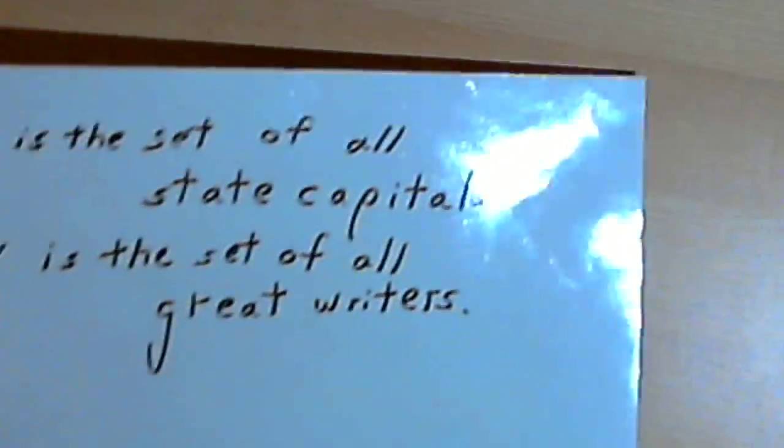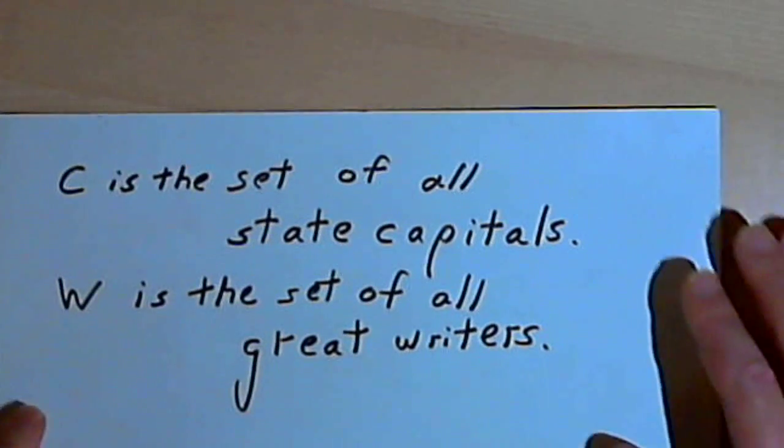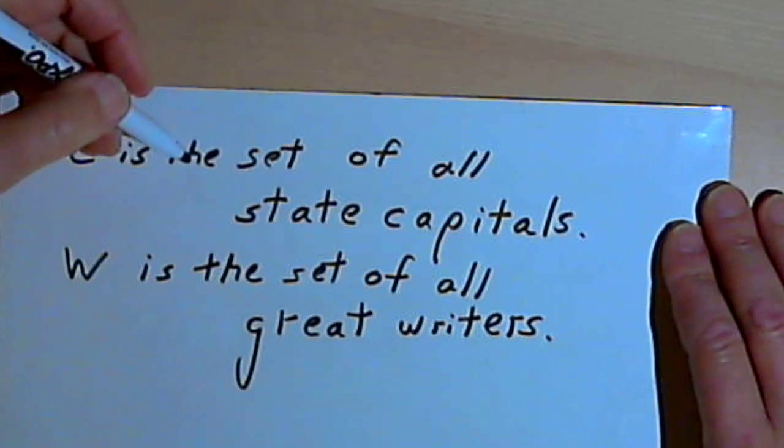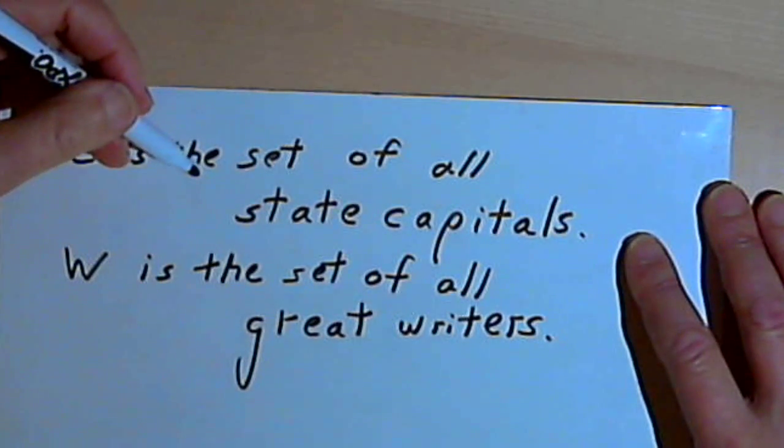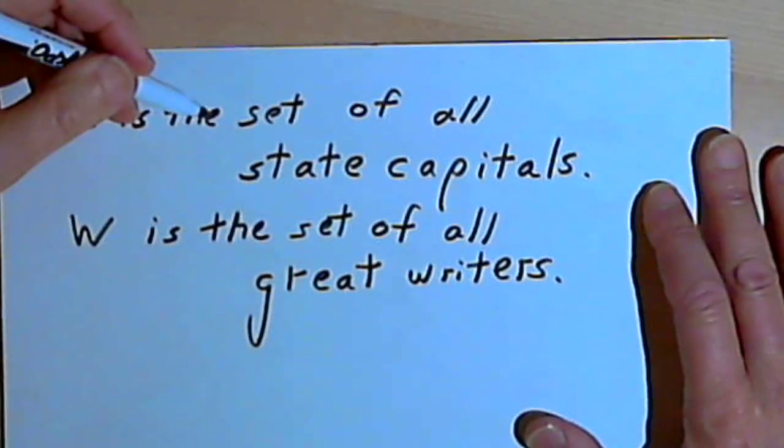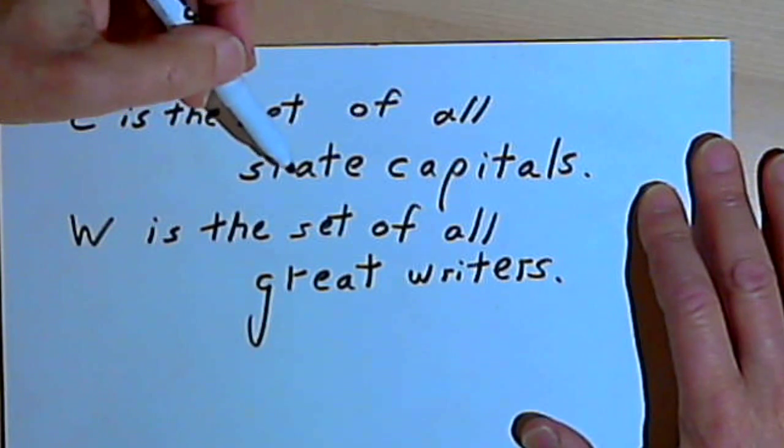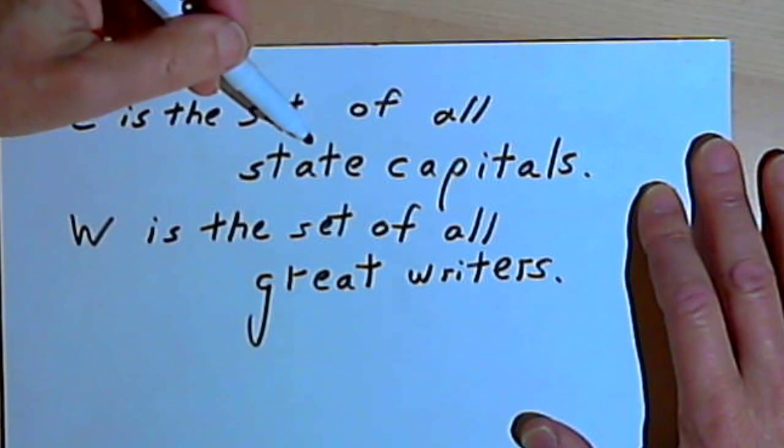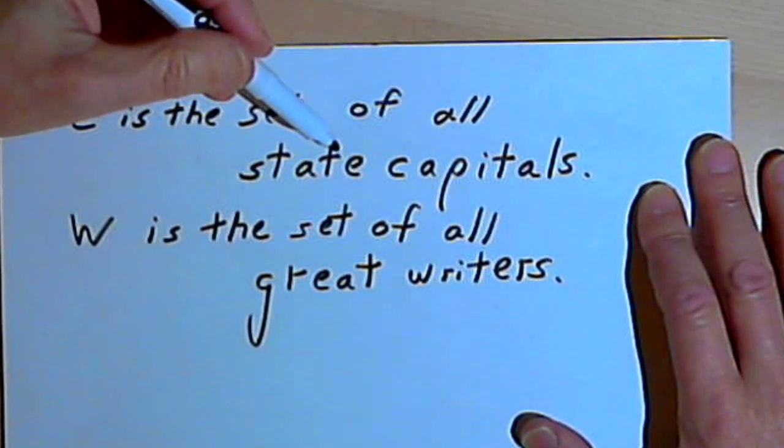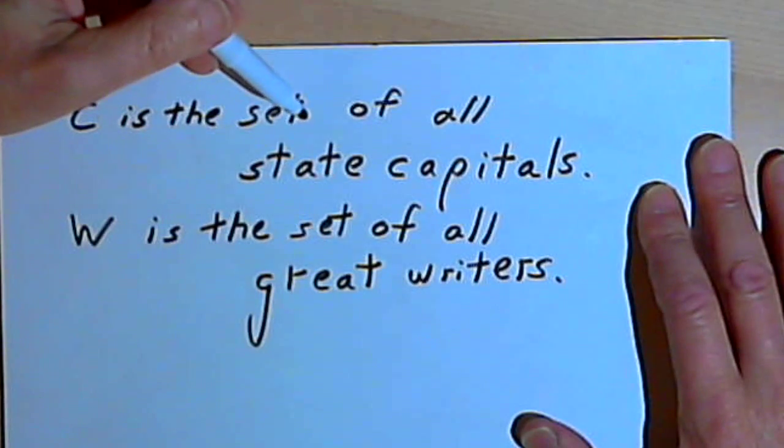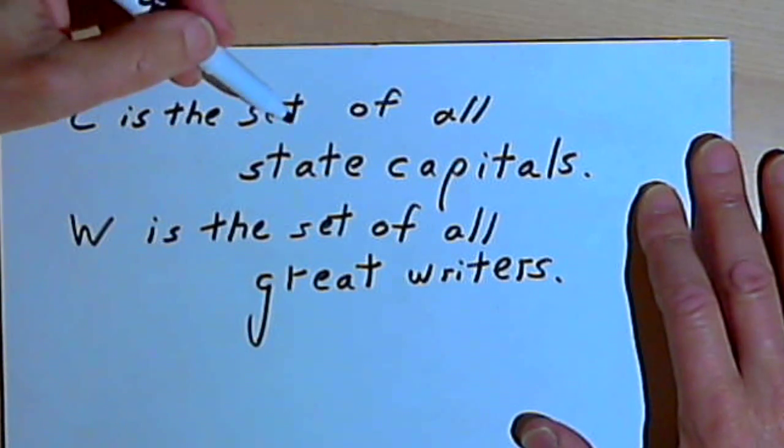There's what's called well-defined sets. So I could say something like C is the set of all state capitals. We know there are 50 states and we could make a list of all 50 state capitals and everybody would have to agree on the same list.